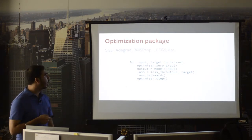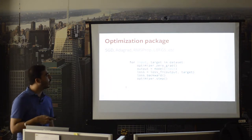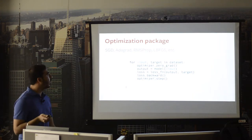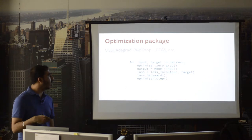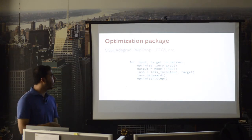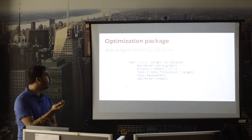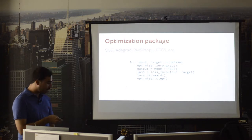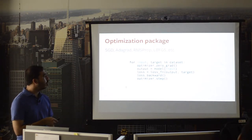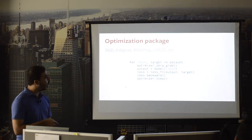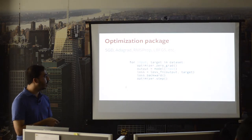There are many optimizers available; the standard is stochastic gradient descent. The loss function of a neural network is like the valleys of the Himalayas — you're standing there and need to go down the steepest slope. The gradient gives you the direction of the steepest descent, and the learning rate is your step size. Once you define your loss function, pass your input to the network instance, get your output, compare it to your target, compute the loss, call loss.backward() to calculate all gradients in one step, then call optimizer.step() to move in that direction.